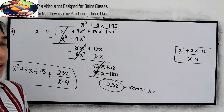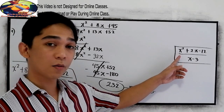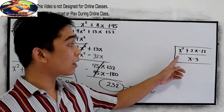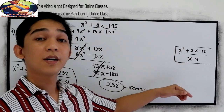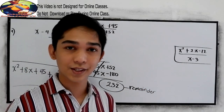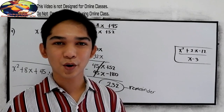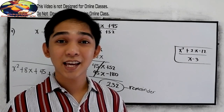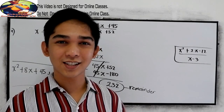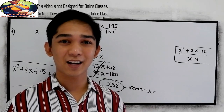Now for your assignment — can you try this problem? x squared plus 2x minus 12 divided by x minus 3. Drop your answer in our comment section. Thank you for watching Senior Pablo TV. See you in our next lesson.